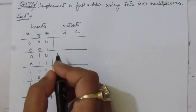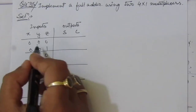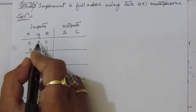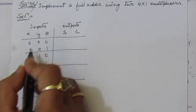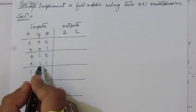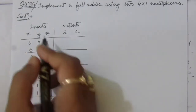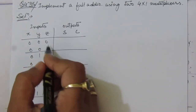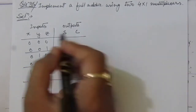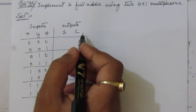Why have we taken two rows as a pair? Because for each pair, the x and y values are the same — you can see that it is 0 0 and 0 0, then 0 1 and 0 1. For each pair, x and y values are the same, and only z is changing: 0 and 1, 0 and 1, and so on. Now let us find out sum and carry.